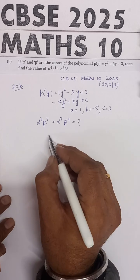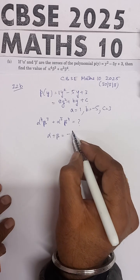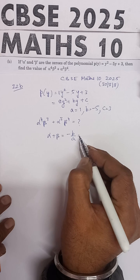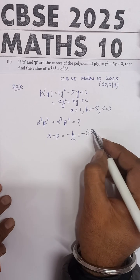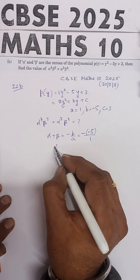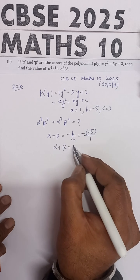The sum of the zeros is -B/A, so -(-5)/1 = 5. Therefore, alpha plus beta equals 5.